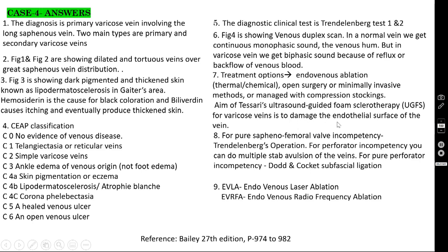What is the treatment in this case? For pure saphenofemoral valve incompetency, you have to do the Trendelenburg operation — saphenofemoral flush ligation. If the patient is also having perforator incompetence — because both Trendelenburg test 1 and 2 are positive — along with the Trendelenburg operation, you should also strip the vein or do multiple stab avulsion. Strip the vein only just below the knee — do not strip the whole vein up to the ankle — for fear of injuring the saphenous nerve, which lies along the great saphenous vein. For pure perforator incompetency, you can do Dodd and Cockett subfascial ligation.